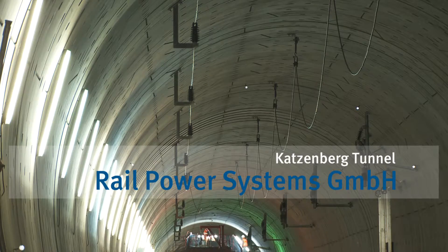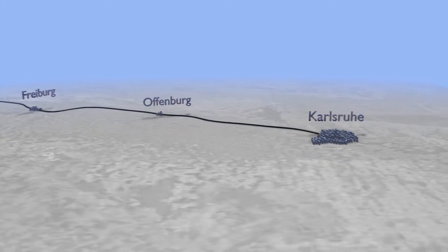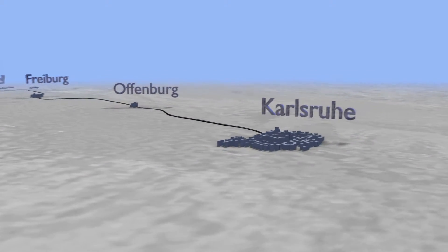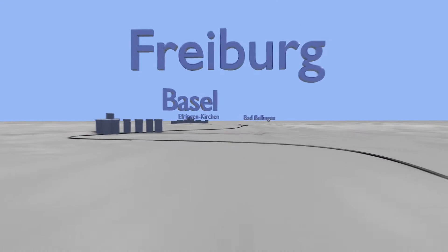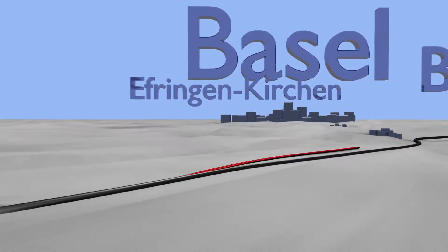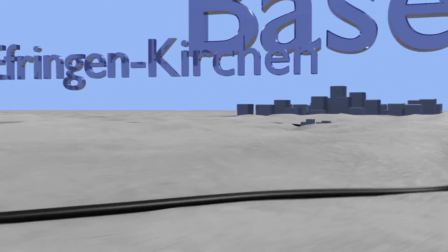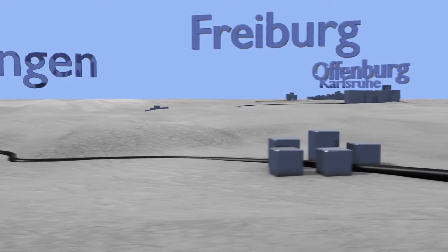The existing Rhine Valley Railway has reached the limits of its capacity and now has to be extended to four tracks. Between Bad Bellingen and Evringenkirchen is the 9.4 km long Katzenberg tunnel, which straightens out the line of the old Rhine Valley Railway. It leads through the outer region of the Markgrefle Land in the area known as Ischdeiner Klotz.